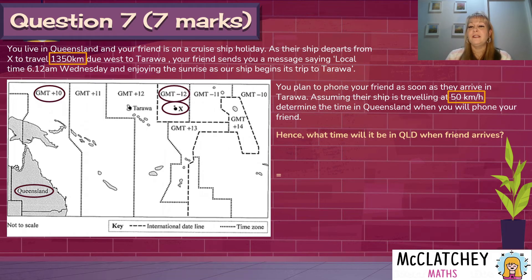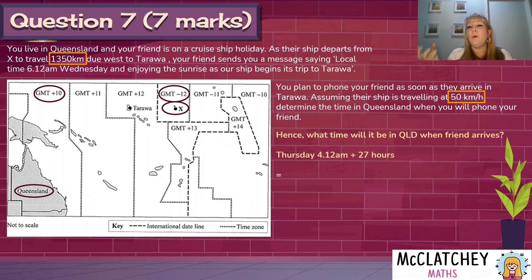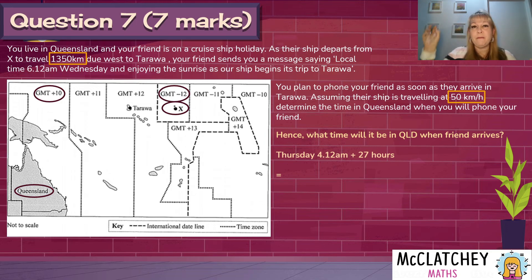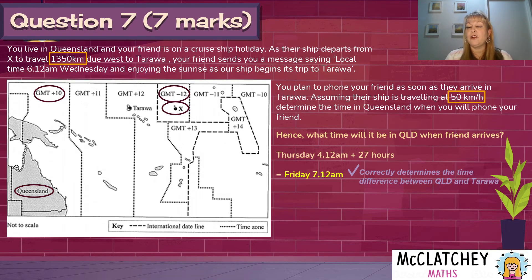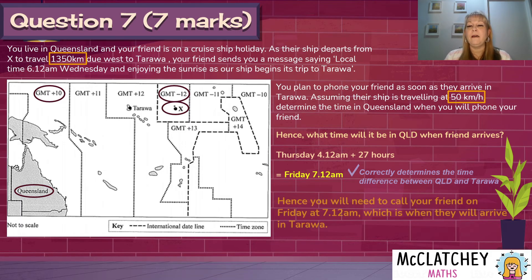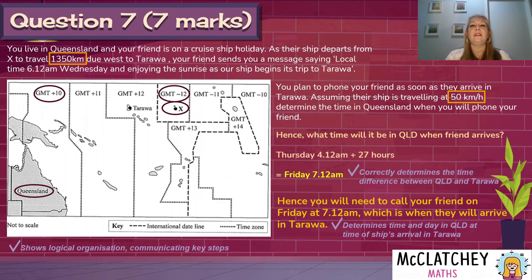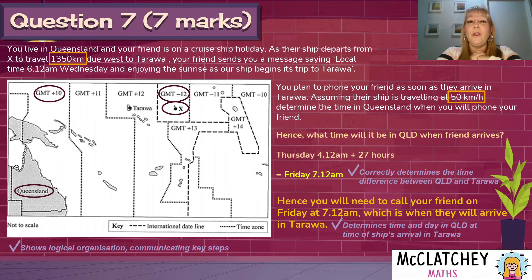Now, what time is it in Queensland when our friend arrives? Take Thursday 4:12am and add 27 hours. The trick: break 27 into 24 hours (one full day) plus 3 hours. Adding one day gives Friday 4:12am, then add three more hours — that's Friday 7:12am. I get another mark for correctly determining the time difference between Queensland and Tarawa, another mark for the correct arrival time and day, and a seventh mark for the organisation and communication of the key steps. Even though my solution differs slightly from QCAA's, it's well organised and earns the full seven marks.